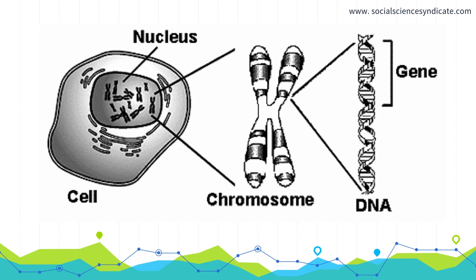Behavioral genetics is the study of the power and the limits of genetic and environmental influences on behavior. How much does DNA really affect who we are? This comes back to the nature versus nurture argument — which one affects who we are more: nature, or genetics, versus nurture, how we grow up? Environment, for the purposes of AP Psychology, is defined as every non-genetic influence — things that aren't in your genes or DNA.